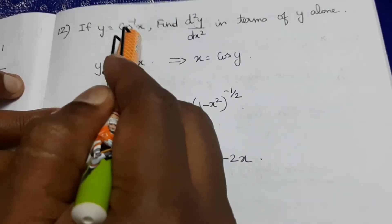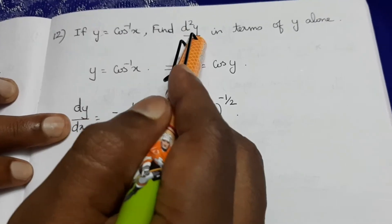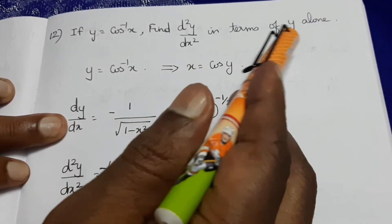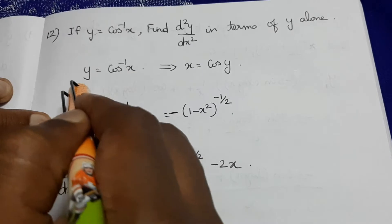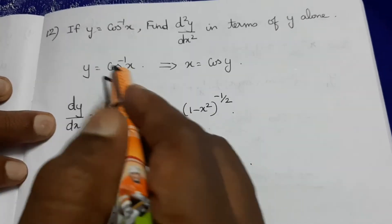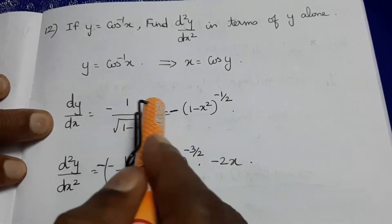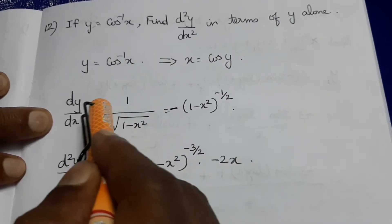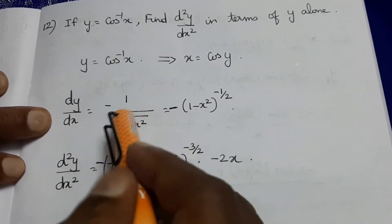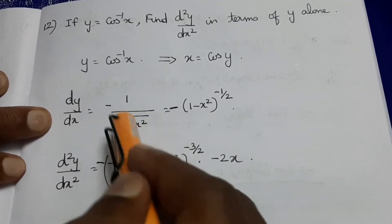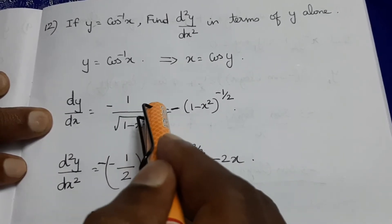If y equals cos inverse of x, find d²y/dx² in terms of y alone. So dy/dx of cos inverse of x equals minus 1 by root of 1 minus x square.